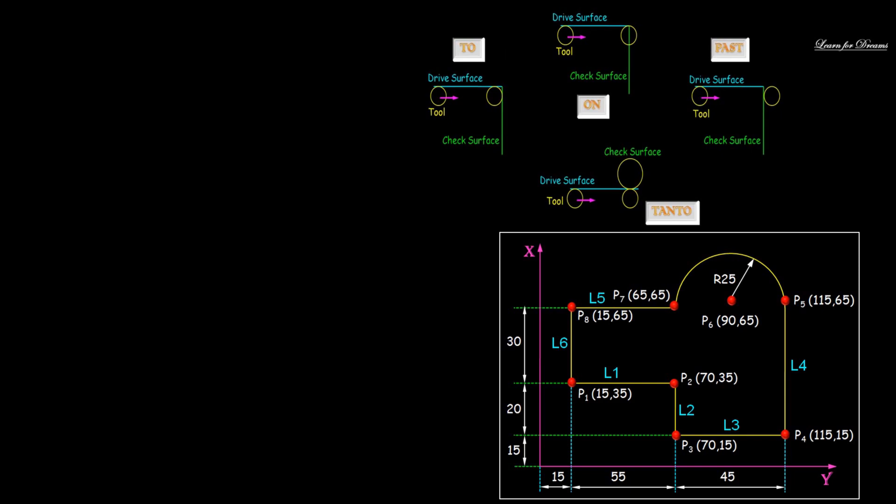Then we will start from a reference point. Then GO slash TO is used for linear interpolation, like G01. Now to stop the tool, we have 4 options: TO, ON, PAST and TAN.